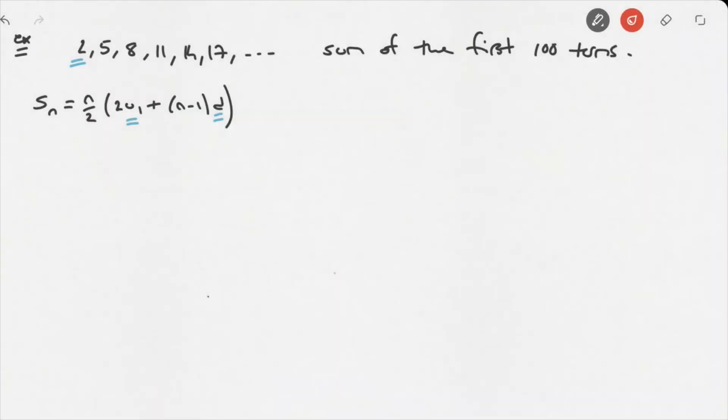And, moving through this sequence going from left to right, we can see that we're always adding the same amount, which is 3. So we can now write u1 equals 2 and d, the common difference, is equal to 3.